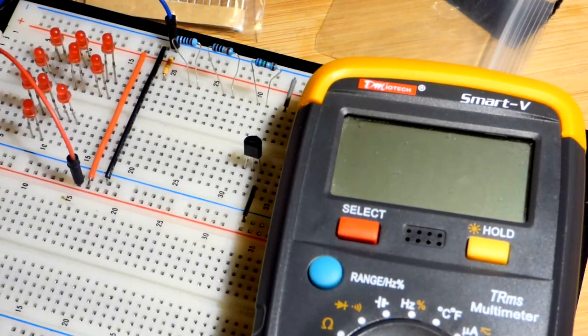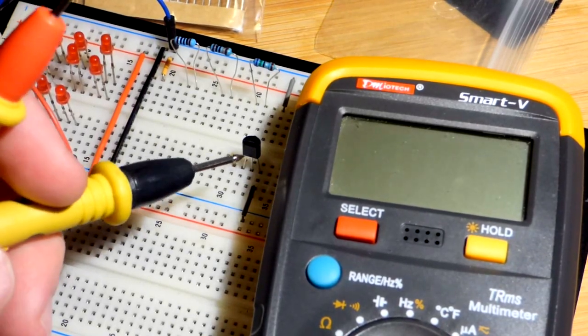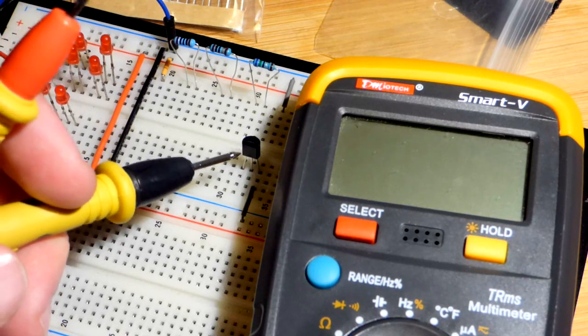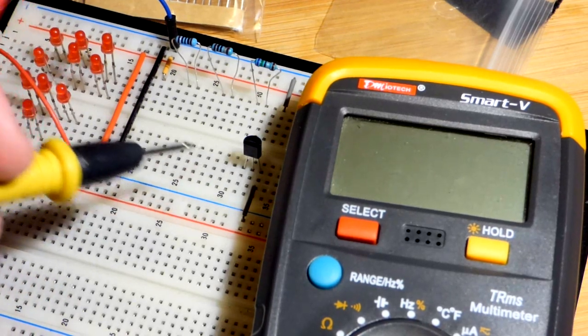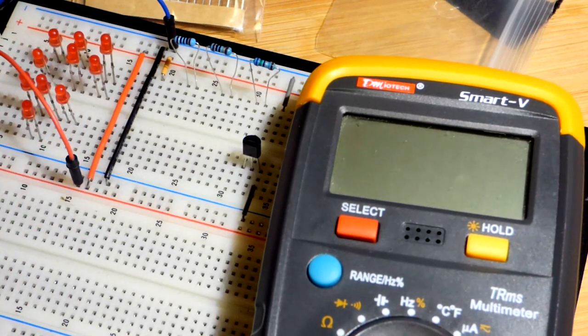So now in this video, we're going to look at an interesting component here. This is the LM334. It is an adjustable current source.